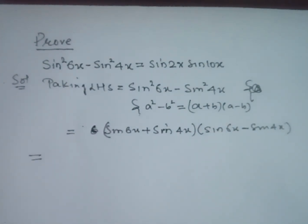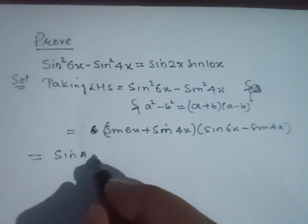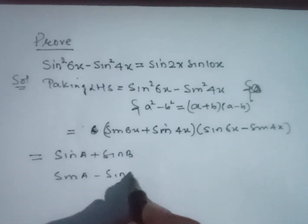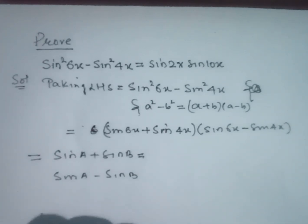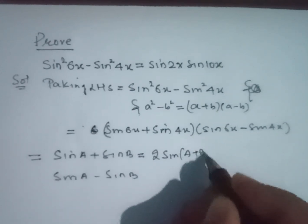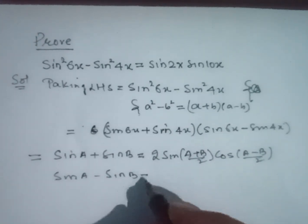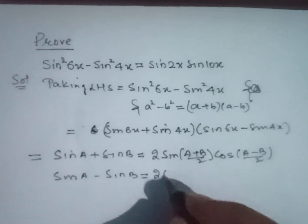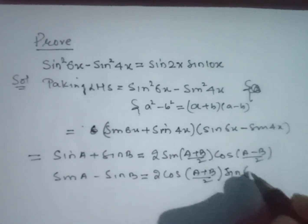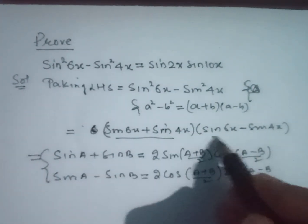Next, we will use two more identities: sin A + sin B and sin A - sin B. The first is sin A + sin B equals 2 sin((A+B)/2) cos((A-B)/2). The second one equals 2 cos((A+B)/2) sin((A-B)/2). These two identities are used here.